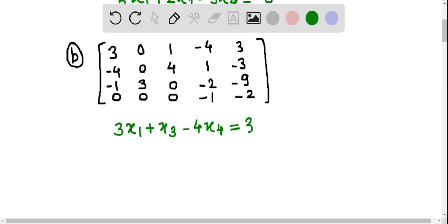From the second row, we can write minus 4x1 plus 4x3 plus x4 is equal to minus 3.